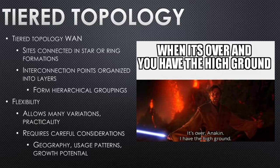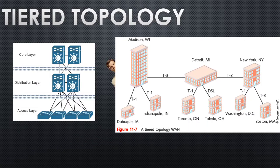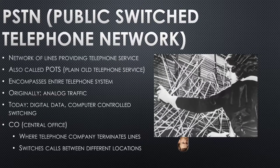Then there's tiered topology, which is really just a combination of the others — star or ring. Looking at the map, you can see a sort of star to the smaller sites and a sort of serial connection to three others. It's a mix of technologies — that's what tiered is.